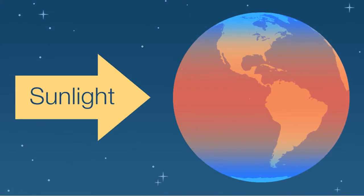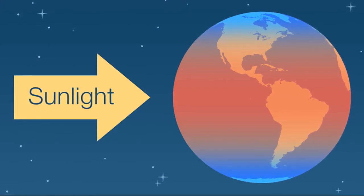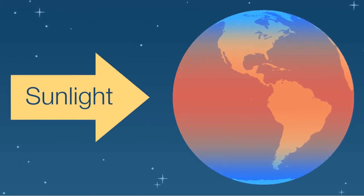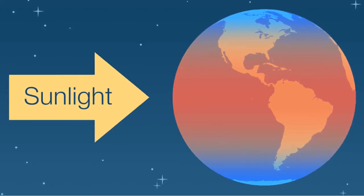In addition to air, the Sun is also extremely important to our weather. Sunlight shines more on some parts of the earth than on other parts. This is why the middle of the earth, which is the red shaded part of this picture, is much warmer than either of the north or south poles, which are cold year-round.